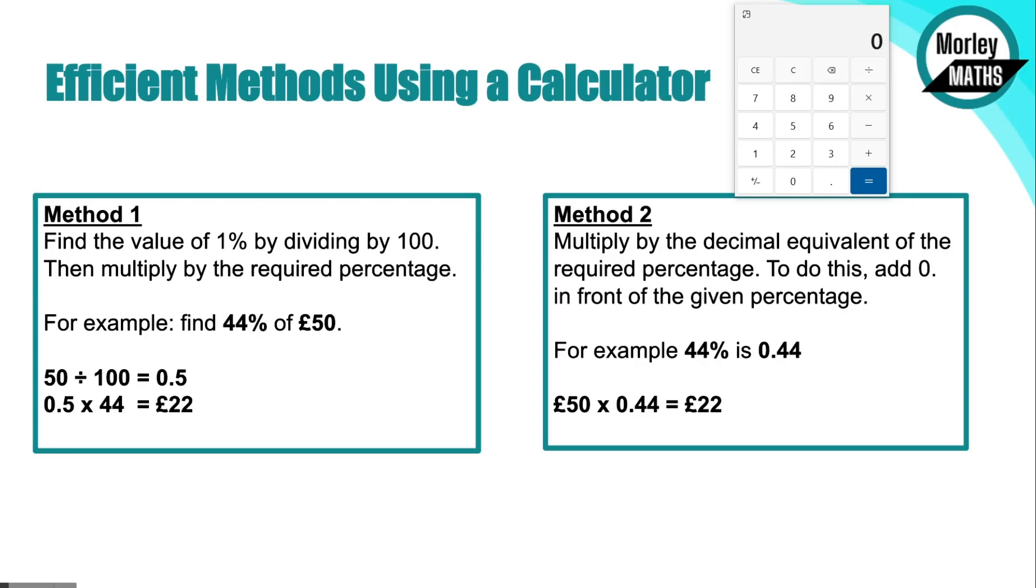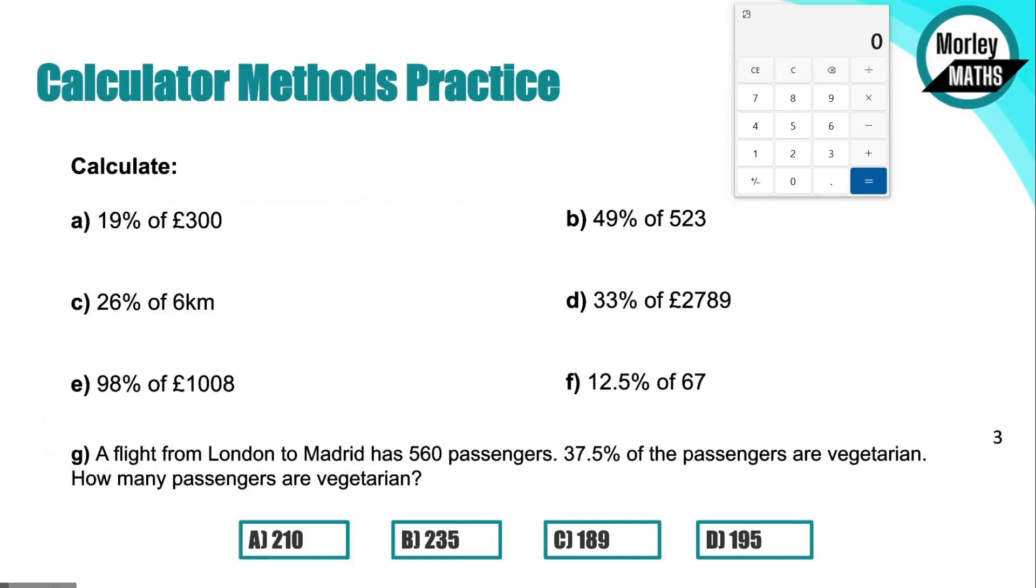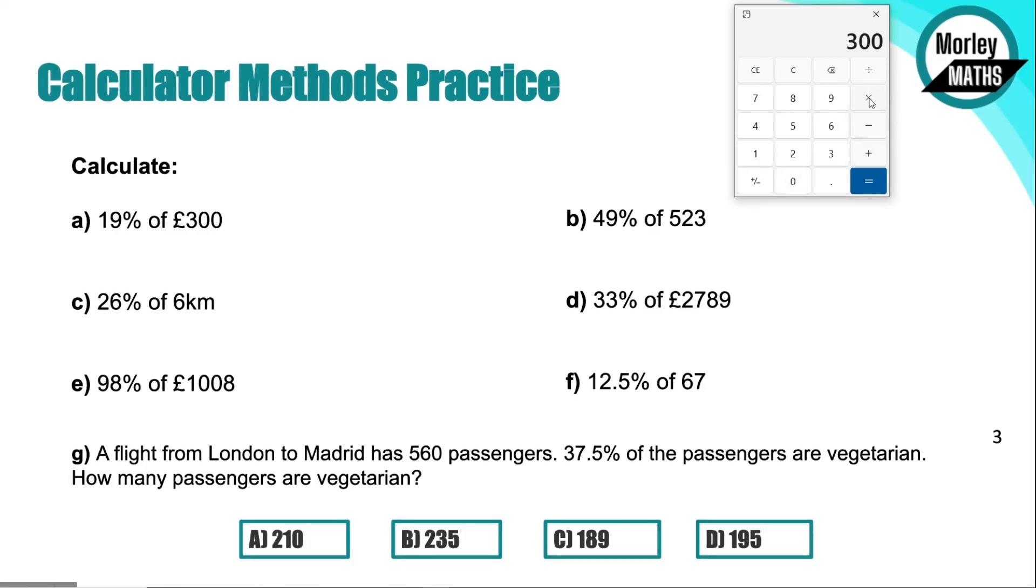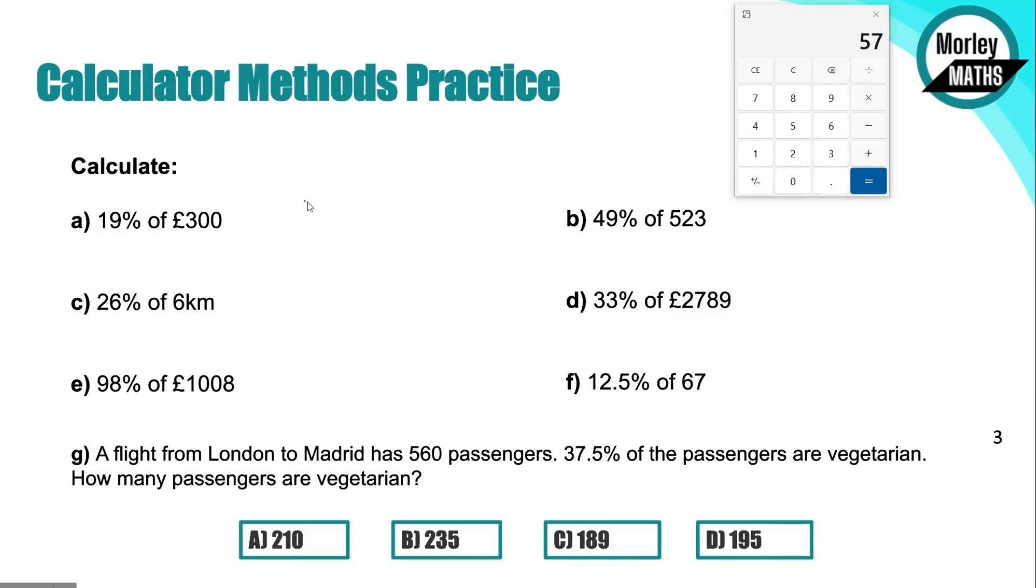So those are the two methods. Hopefully you've got one of those two methods that you've decided you want to choose. We've got some practice questions that we're going to go through now. I do have the calculator on screen so we'll be able to show you how these work. If we look at question A, we need to calculate 19% of 300 pounds. So if we've got 300, we'll times that by 0.19, and that gives us 57 pounds as our answer.